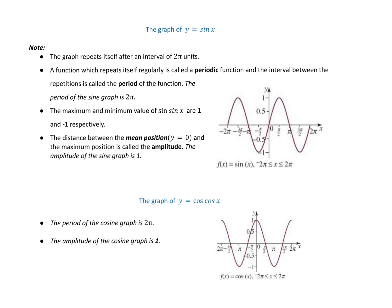When we have a basic sine graph, we're going to see this basic up-down shape. The period is 2π and the amplitude is 1.